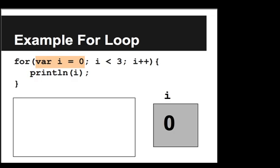So let's trace through this code. So first we initialize, and we write var i equals zero, so we have a variable i, and we set its value equal to zero.